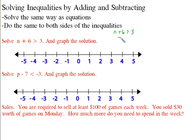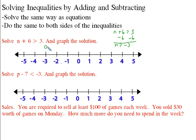All I do is the same thing I would do with any problem — I subtract 6 from both sides. So now I've got n is greater than 3 minus 6, which is negative 3. I put my little round circle there, and since it's greater than negative 3, I draw the line that way.